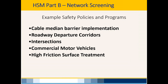Annual project prioritization examples include: cable median barrier screening using roadway elements, median type, roadway type (must be interstate), ranked by crash frequency looking for crossover crashes; roadway departure corridors on rural two-lane high-speed facilities; intersection databases with crashes spatially tied to locations statewide; and commercial motor vehicle crash lists compiled per our Strategic Highway Safety Plan emphasis area.